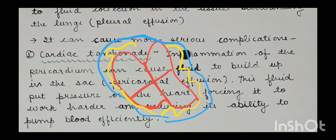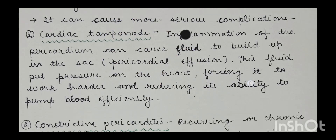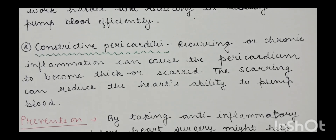Another complication is constrictive pericarditis. Recurring or chronic inflammation can cause the pericardium to become thick and scarred. This scarring can reduce the heart's ability to pump blood.